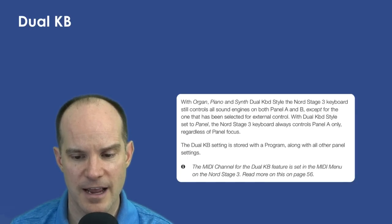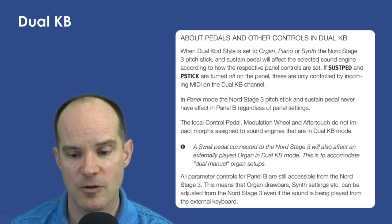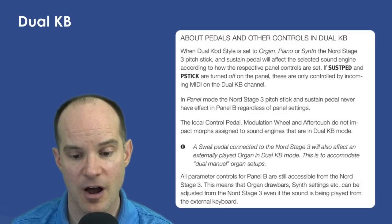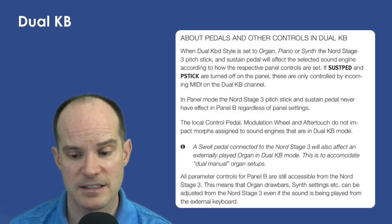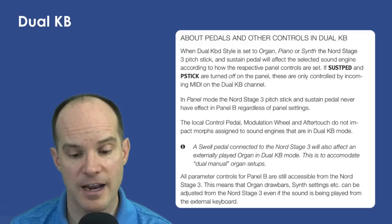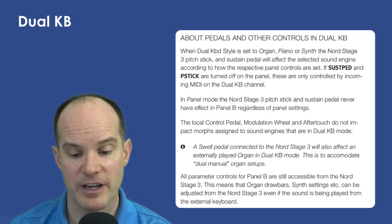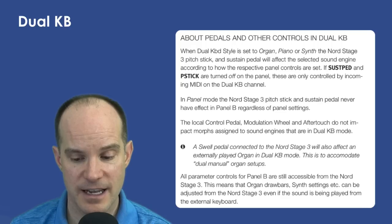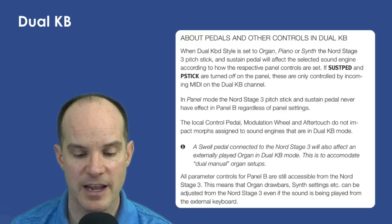Regarding pedals: when Dual Keyboard style is set to organ, piano, or synth, the Nord Stage 3 pitch stick and sustain pedal affect the selected sound engines according to how the panel controls are set. If sustain pedal and pitch stick are turned off on the panel, these are only controlled by incoming MIDI on the dual KB channel. In panel mode, the pitch stick and sustain pedal never affect Panel B regardless of panel settings. The local control pedal, modulation wheel, and aftertouch do not impact morphs assigned to engines in dual keyboard mode. A swell pedal connected to the Nord Stage 3 will also affect an externally played organ in dual keyboard mode, to accommodate dual manual organ setups. All parameter controls for Panel B — organ drawbars, synth settings, etc. — are still accessible from the Nord Stage 3, even if the sound is being played from the external keyboard.